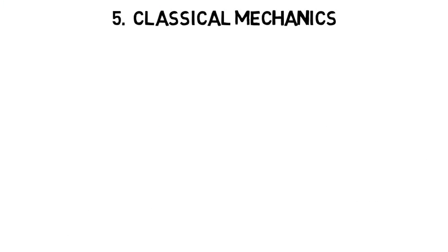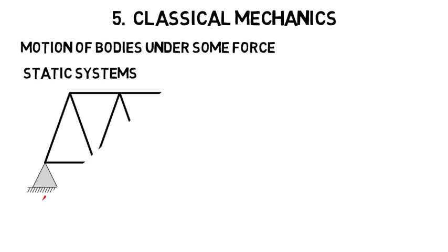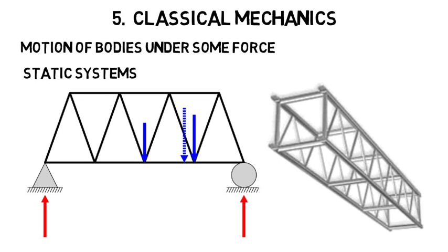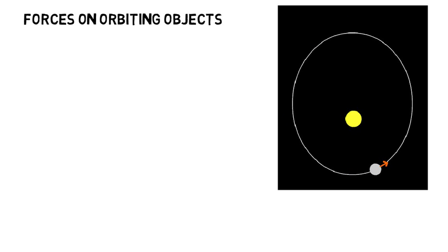Classical mechanics is the motion of bodies under some force. This includes understanding forces on static systems, like bridges or similar structures, like a civil engineer would do, or the physics of air flow over objects that depend on it, like aerospace and mechanical engineers would see, or forces on orbiting objects, like an astronautics engineer might see.